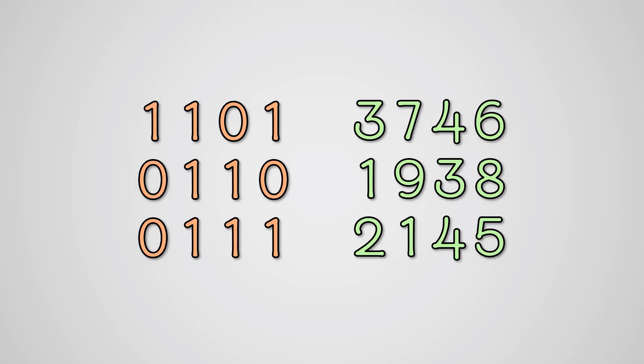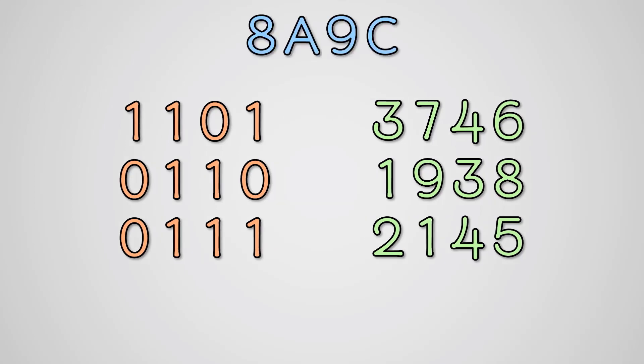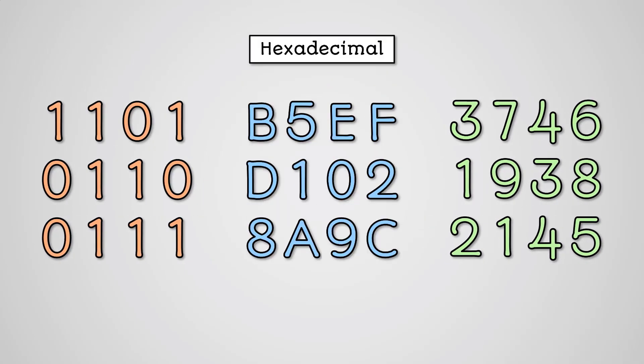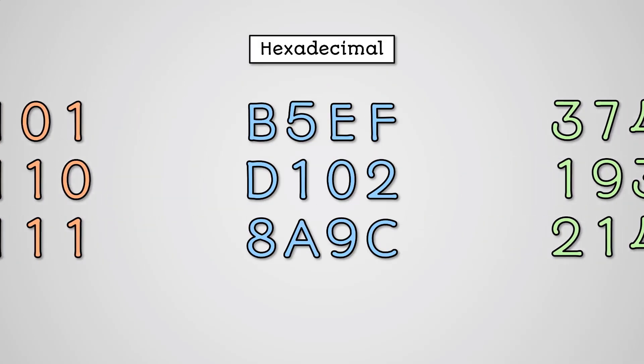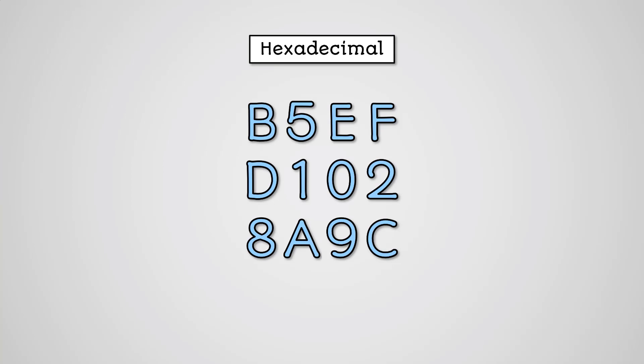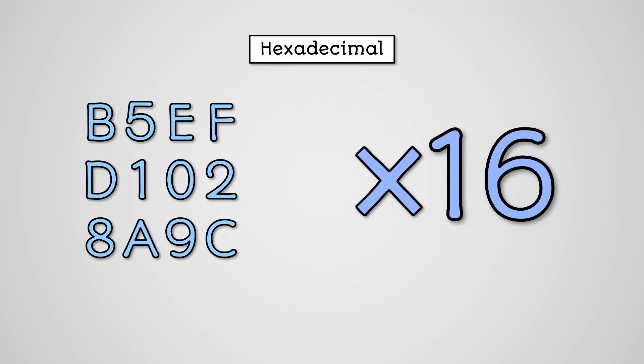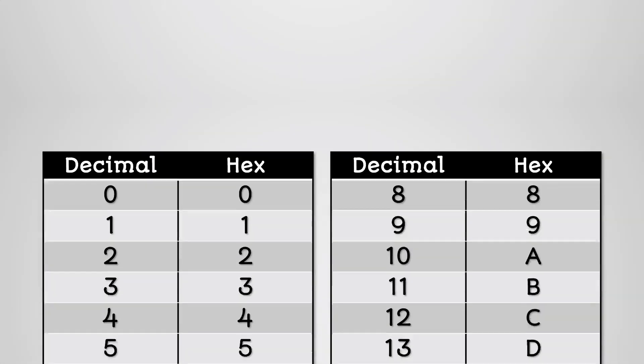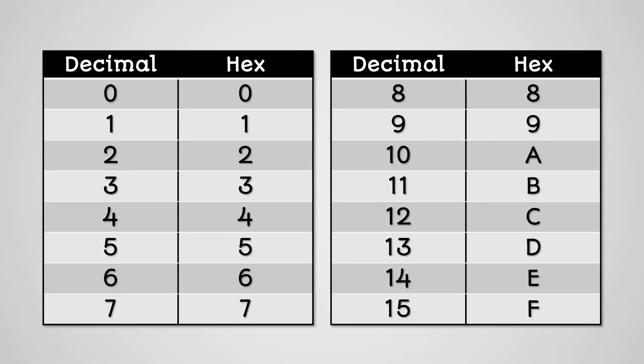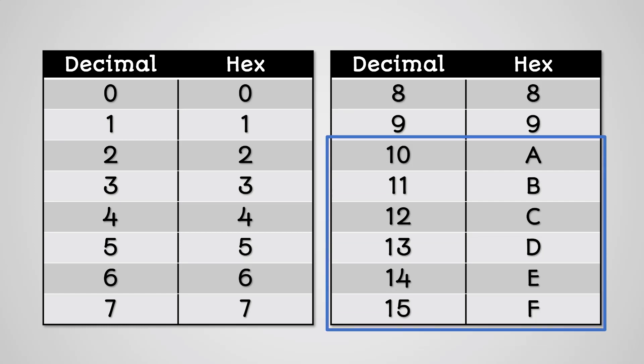So far we have looked at two number systems: binary and decimal. Another common number system used in computer science is hexadecimal, or hex for short. Hexadecimal notation is a numbering system where everything goes up in multiples of 16. However, because our decimal numbering system only goes up from 0 to 9, to get the remaining numbers we have to use letters A to F.